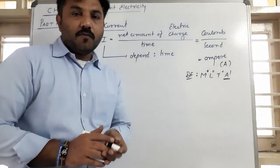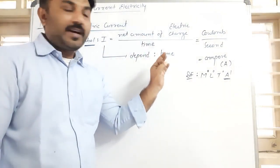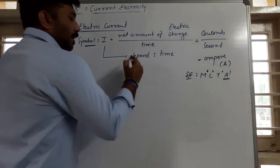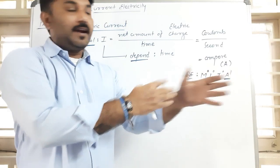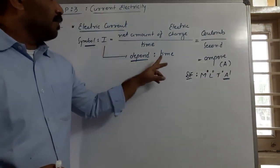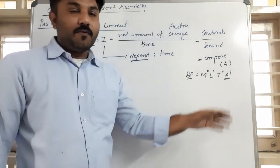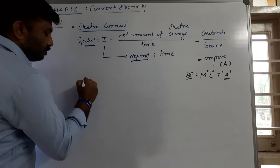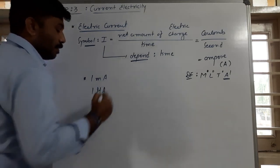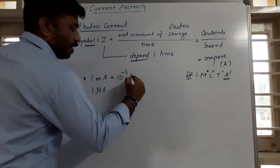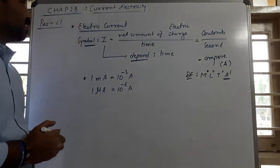So, this is all about electric current. There are two smaller units: milliampere and microampere, as we have seen in 10th standard. Milli means 10 raised to minus 3 ampere, and micro means 10 raised to minus 6 ampere.